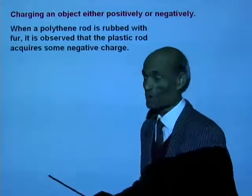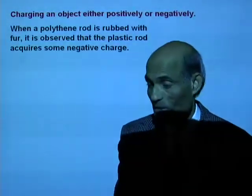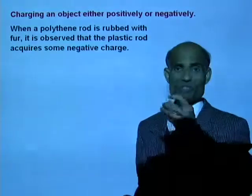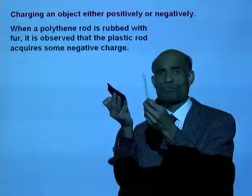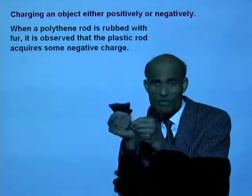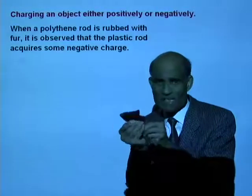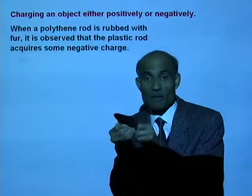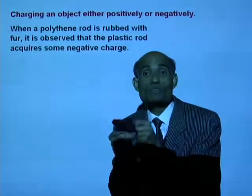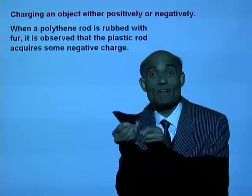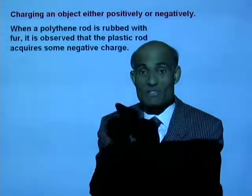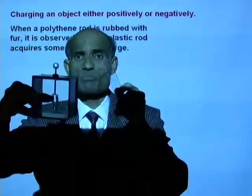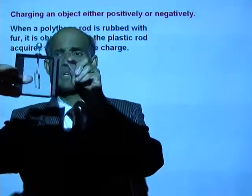When a polythene rod is rubbed with fur, that is another way of charging objects. This is a polythene sheet. If I rub it with fur very vigorously, the same phenomenon can happen — electrons from fur will get transferred to the polythene sheet. Let's see if the polythene sheet has some excess charge by bringing it close to the electroscope.